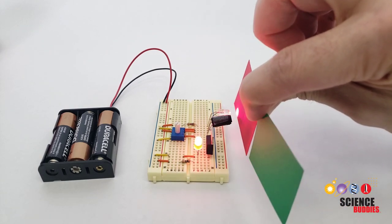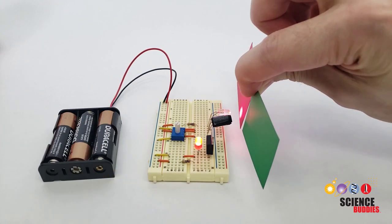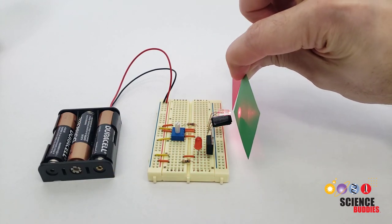This simple circuit can tell the difference between red and green. Notice how this LED only lights up when I hold the red paper in front of the sensor.